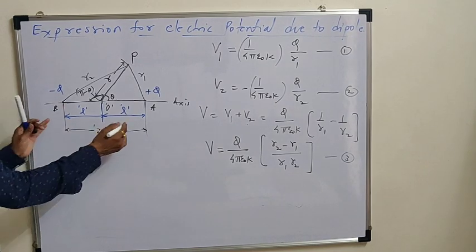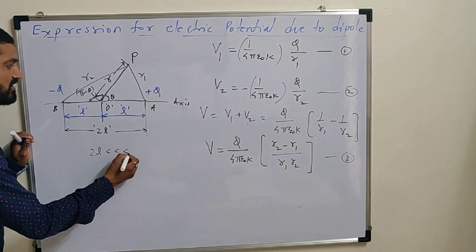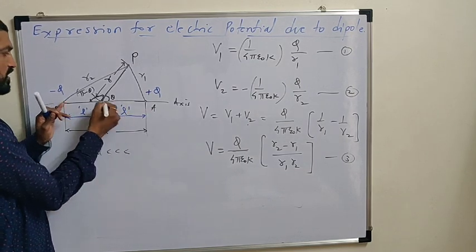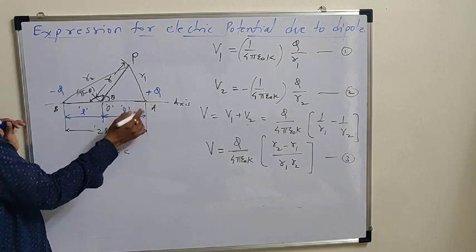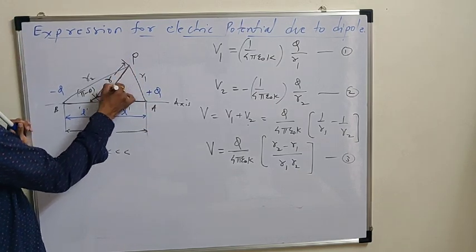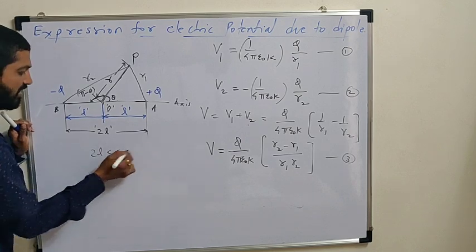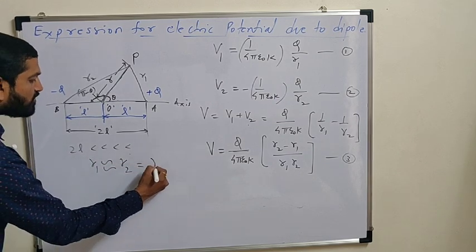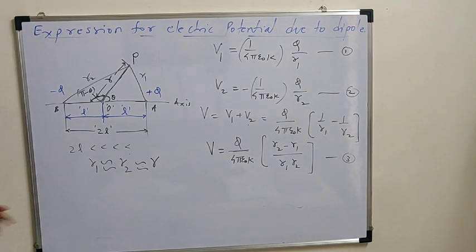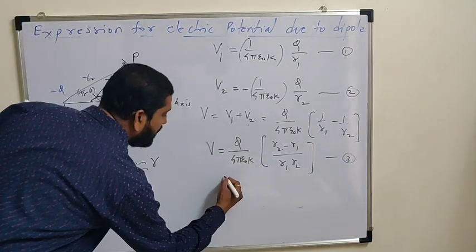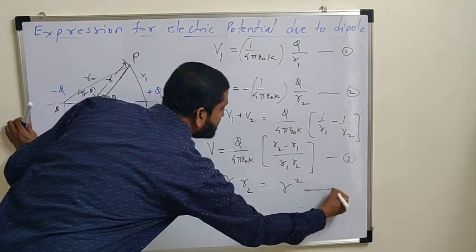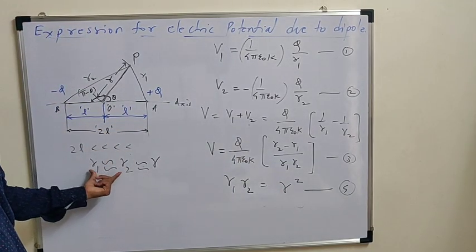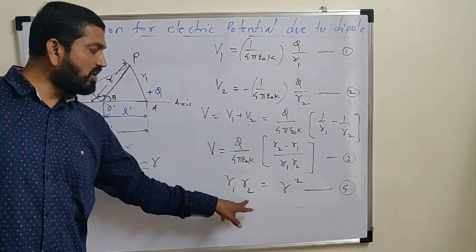Actually, we are going to assume this dipole is a very short dipole. Short dipole means 2L is very, very small. And therefore, L becomes very, very small, almost 0. And point A and point B they are approaching to the center. When dipole is short, 2L is very small. We can say that R1 is approximately equal to R2 is approximately equal to R. In the denominator the value of R1, R2 we can replace as R into R, R square. Equation number 4. When dipole is a short dipole, these two distances are very small and approximately equal to R. Hence, denominator R1×R2 can be replaced as R².